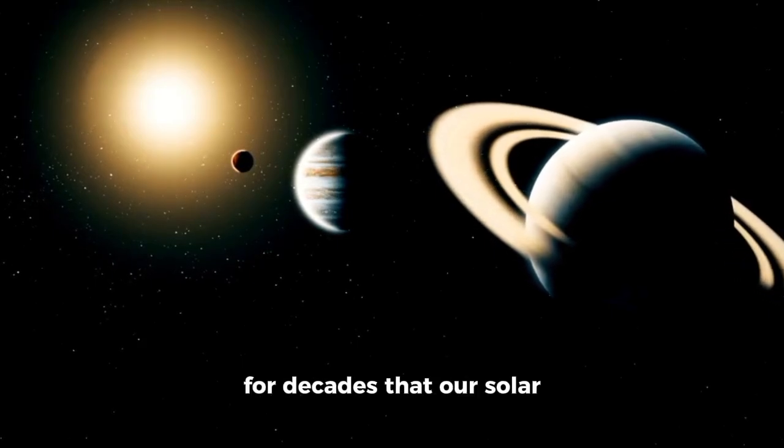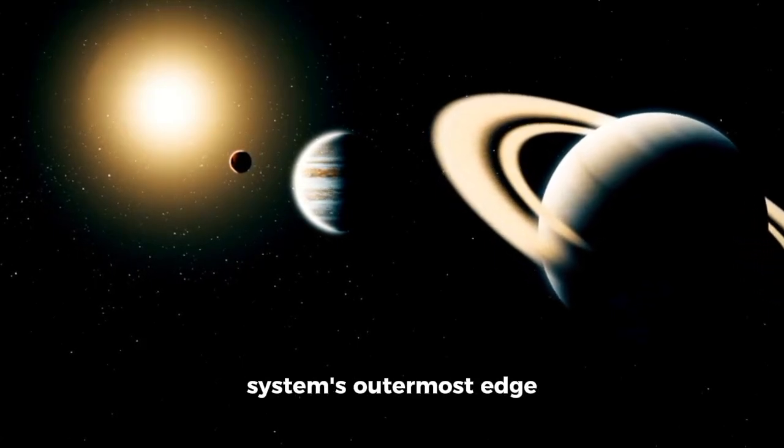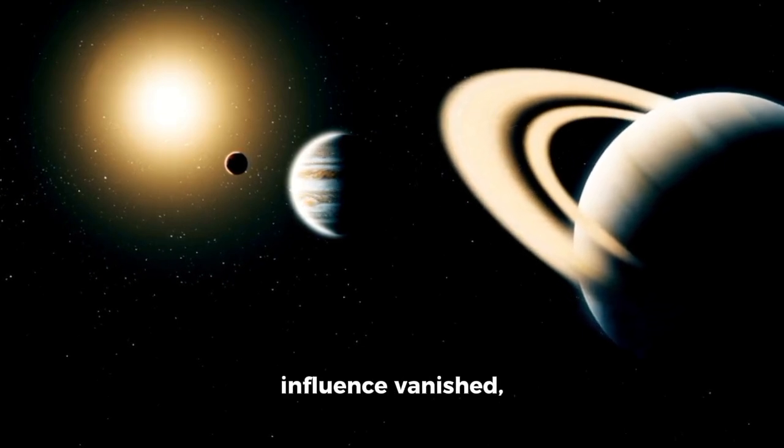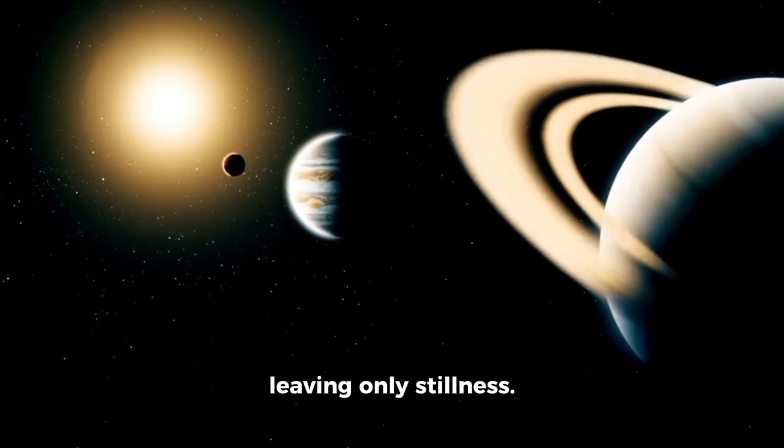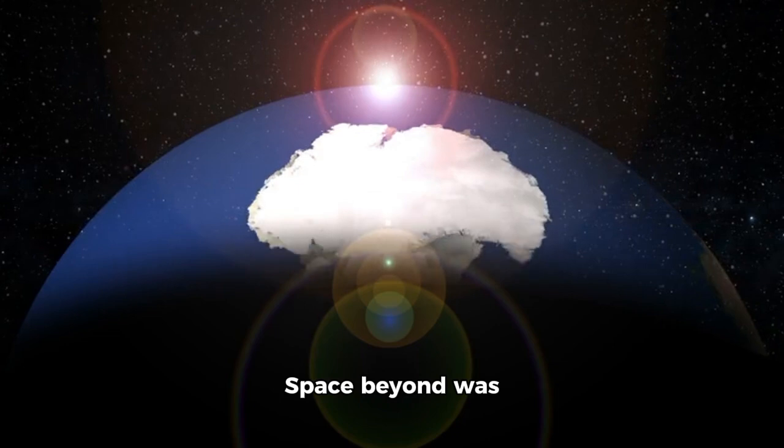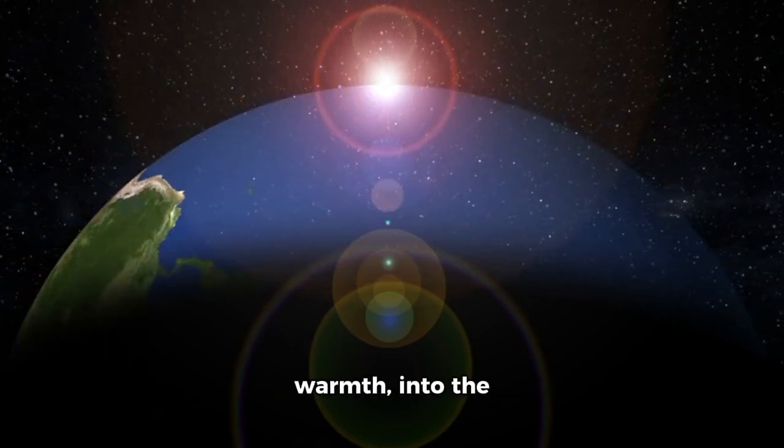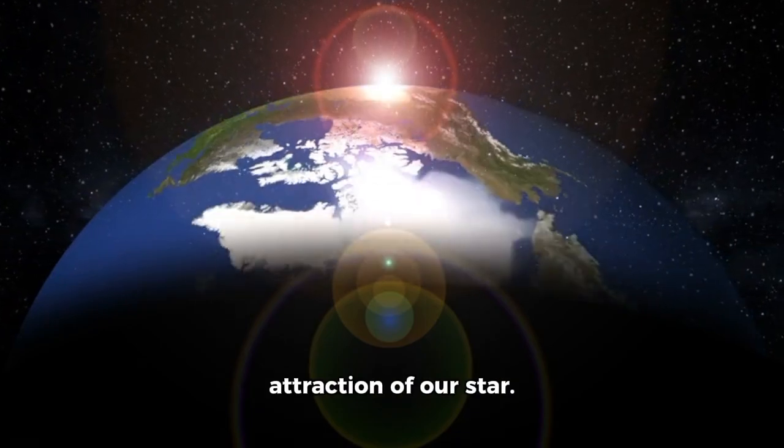Scientists held the belief for decades that our solar system's outermost edge was a region silent and empty, where the sun's influence vanished, leaving only stillness. Space beyond was considered a transition leading away from warmth into the unknown and beyond the attraction of our star.